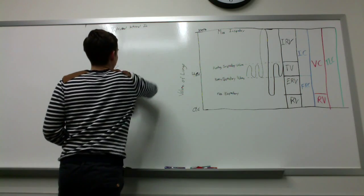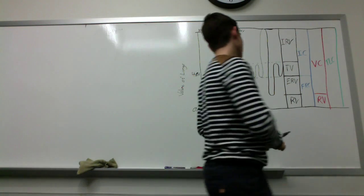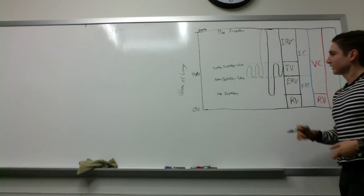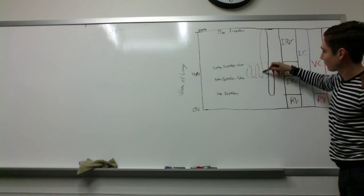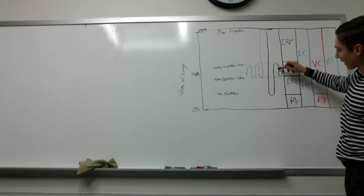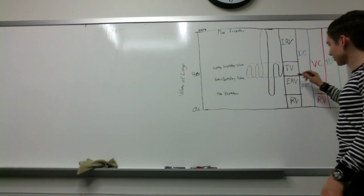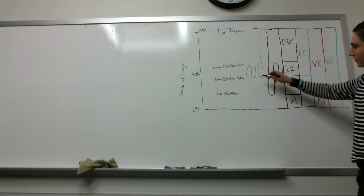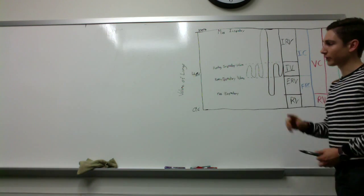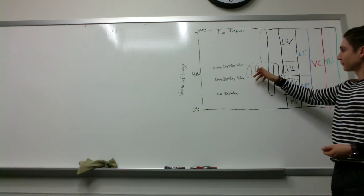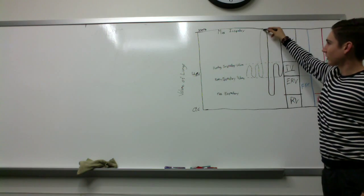Moving on to all the abbreviations for lung volumes. Looking at a diagram showing normal breaths followed by a deep breath in and out: during normal breathing, the air moved is called the tidal volume — the volume between the resting expiratory level and the resting inspiratory level, so you're breathing pretty shallowly. From the tidal volume, if you take a deep breath all the way in to maximum, that extra volume is the inspiratory reserve volume.